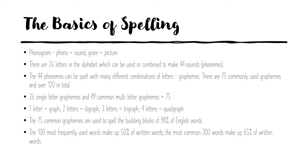Those 75 common graphemes are used for the building blocks of over 90% of English words. So we think English doesn't follow the rules, but it does — there are lots of rules about how it is put together. If we look at the 100 most frequently used words, they make up 50% of what we read. If we get to the 300 most common words, that's actually 65% of what we actually see written down. So it really is worth knowing some basic rules and basic strategies for spelling.